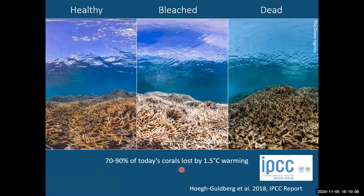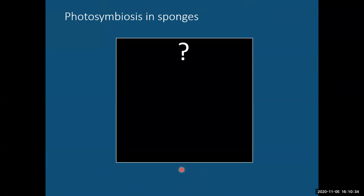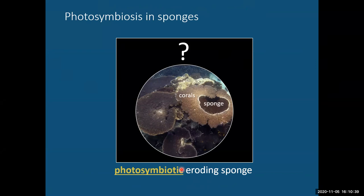You'll also be familiar with coral bleaching, which happens when the photosymbiosis breaks down due to global warming, leading to widespread coral death in recent years. But what about photosymbiosis in sponges? Sponges are textbook examples of filter-feeding consumers, celebrated for their heterotrophic efficiency. They host vast populations of heterotrophic microbes, but we know relatively much less about their photosynthetic symbionts. A couple of years ago, when I first realized my model sponge was symbiotic with photosynthetic microbes, I honestly didn't think much of it.